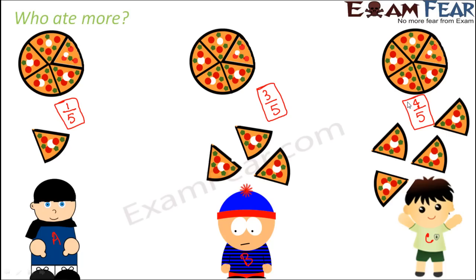So one-fifth, three-fifths, and four-fifths are fractions — they tell you how much part of the complete pizza was eaten by each person. Now if we compare the amounts eaten by A, B, and C, we compare these fractions. One-fifth is less than three-fifths, and three-fifths is less than four-fifths. So A ate the least and C ate the most, followed by B.